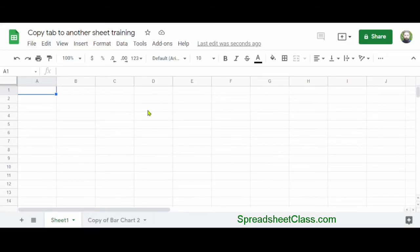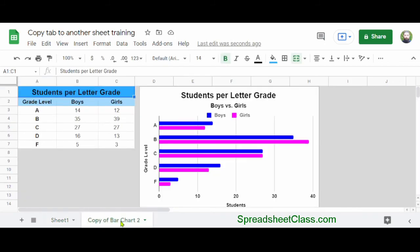And so as you can see, in this destination spreadsheet, another tab has appeared and it's called 'Copy of Bar Chart 2.' And if I click on this, it's the exact same tab that I copied from the other Google Sheets file.